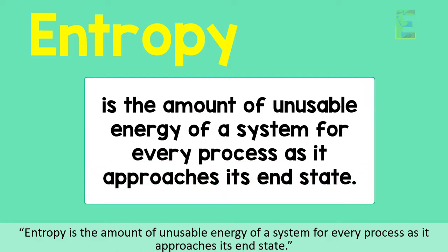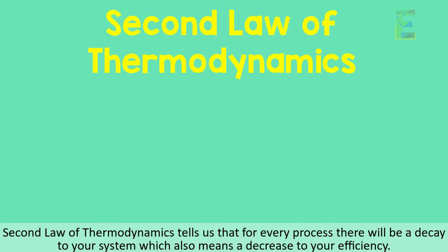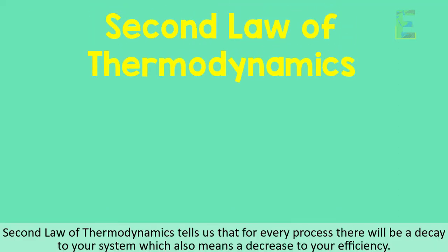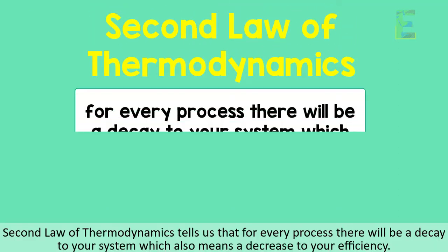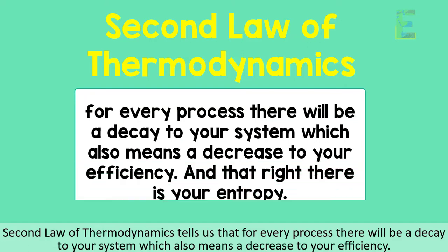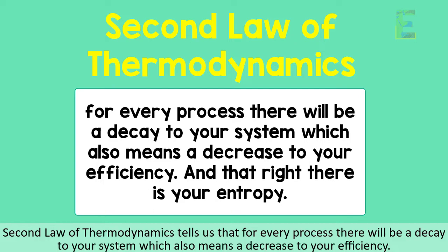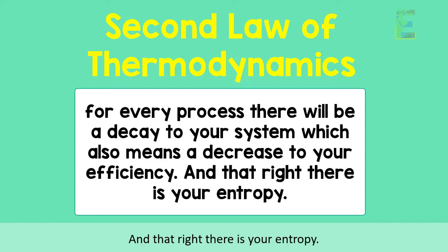For every process as it approaches its end state, the second law of thermodynamics tells us that for every process there will be a decay to your system, which also means a decrease to your efficiency — and that right there is your entropy.